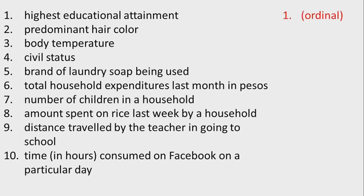Let us answer. Highest educational attainment is ordinal — of course, you can order from lowest to highest: daycare, kindergarten, elementary, high school, college, master's, and doctorate. Number two: predominant hair color is nominal.